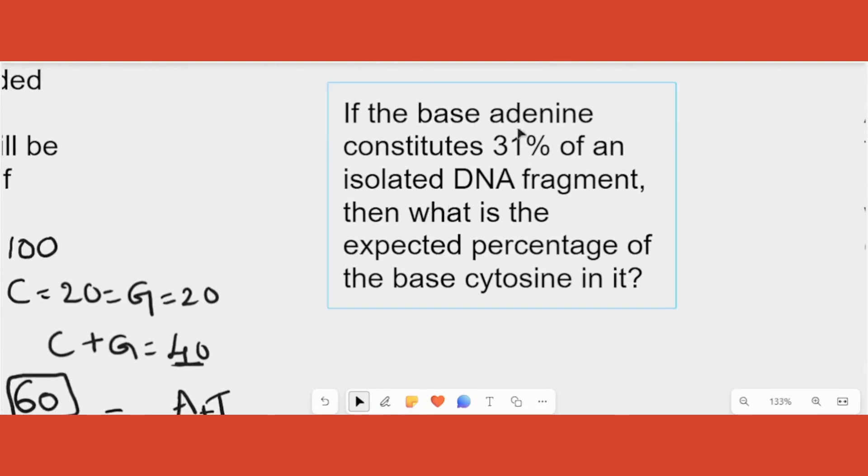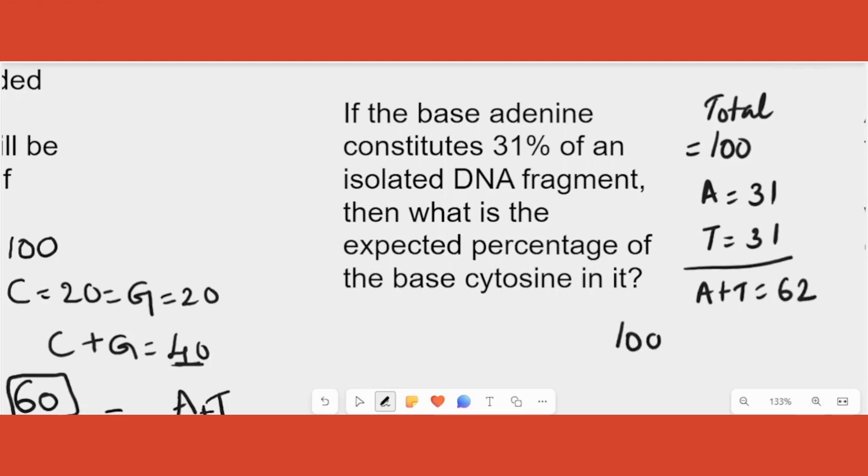Next question says if the adenine is 31 percent. So total number how much we have to take? Total is 100. Now in that A is equal to 31. Therefore T is also 31 for sure. Total of A plus T will be 62. Leftover is 100 minus 62. How much is 100 minus 62? 100 minus 60 is 40, minus 2 more is 38. So 38 is what? C plus G is equal to 38. Now how much is cytosine?